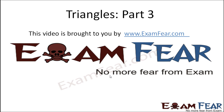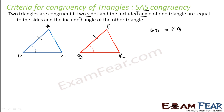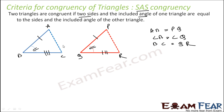This video on triangles part 3 is brought to you by examfia.com. The SAS congruency criterion states that if two sides and the included angle — that is, side-angle-side — are equal in two triangles, then the triangles are congruent. For example, in triangles ABC and PQR: if AB equals PQ, angle B equals angle Q, and BC equals QR, then the two triangles are congruent.